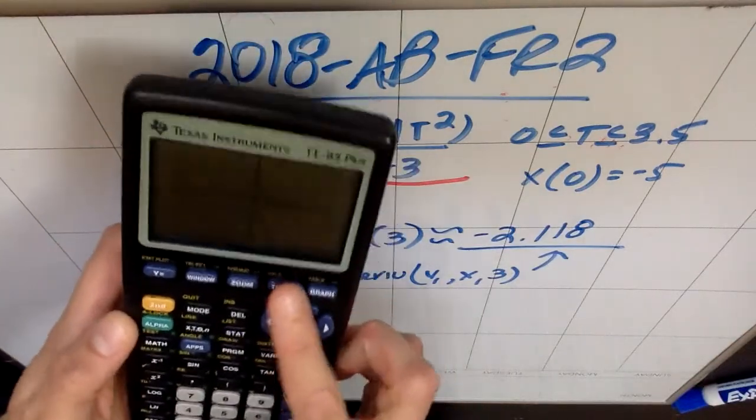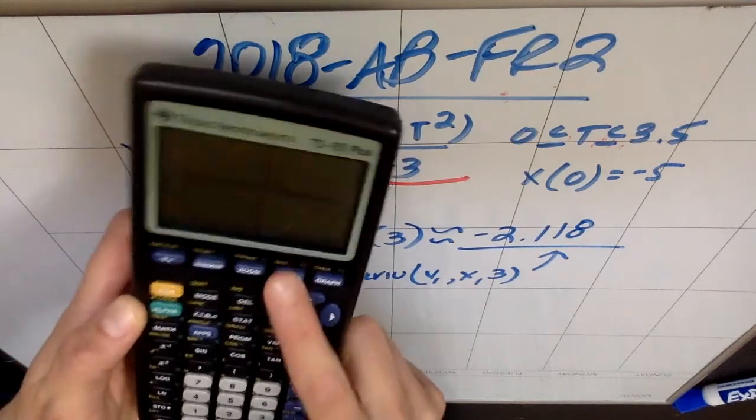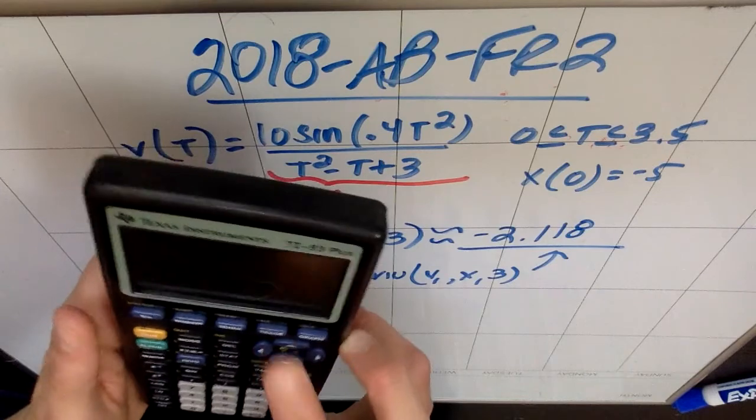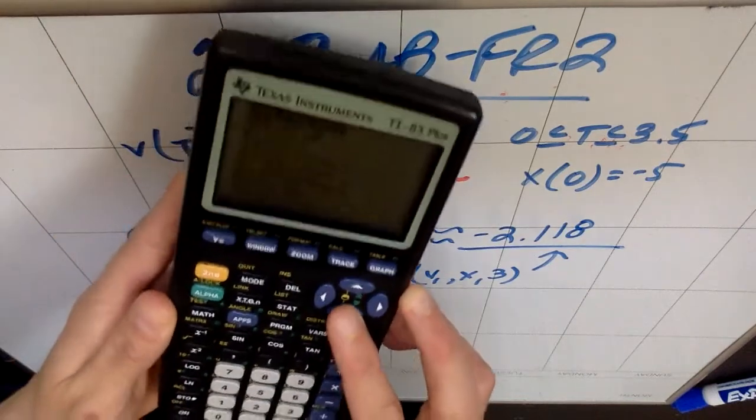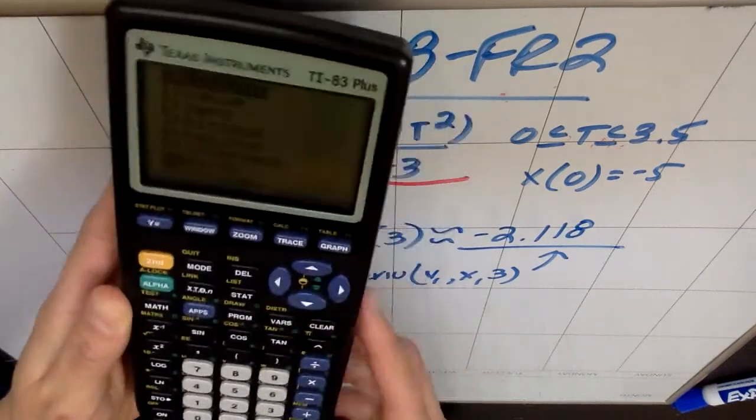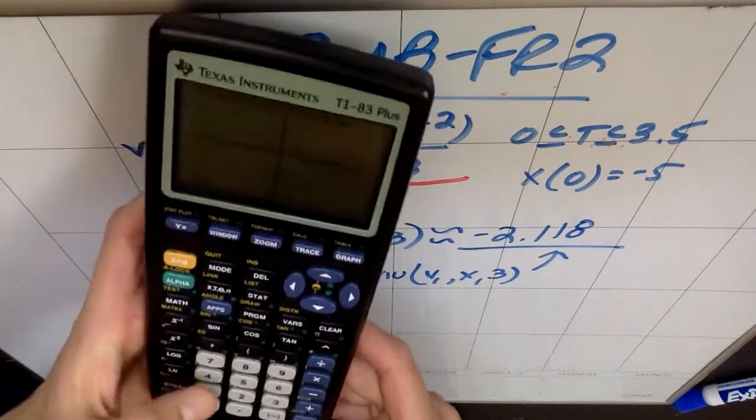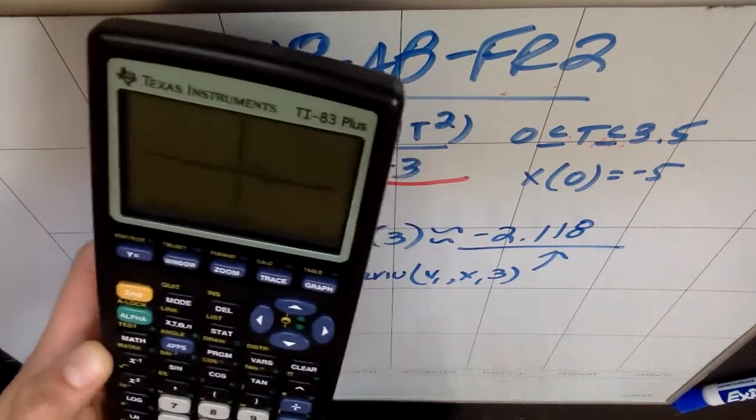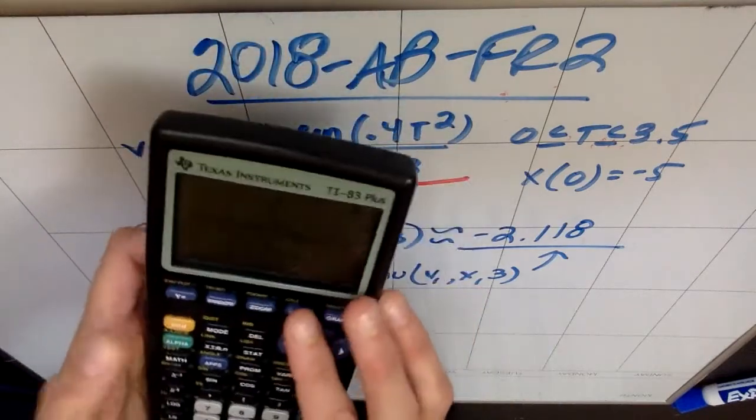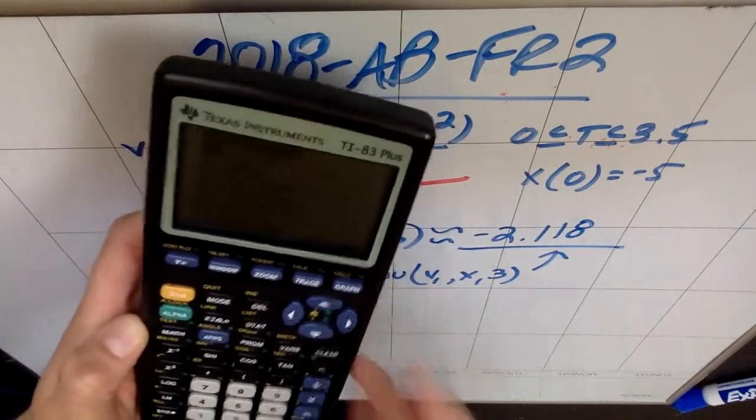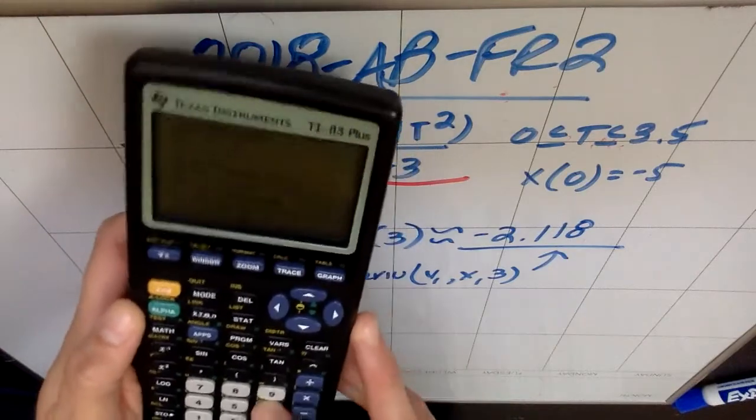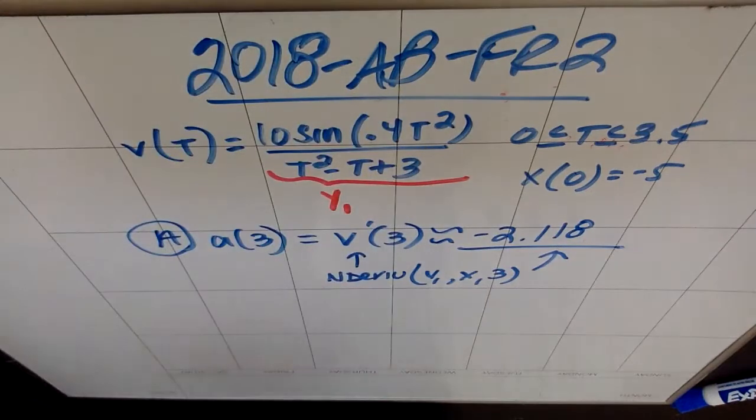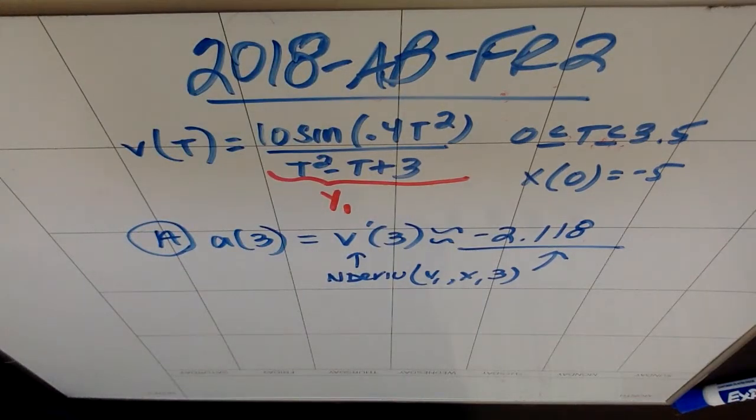It's negative 2.118, and they didn't give me units, so I don't need units. And again, you should know that the way to do this is by going to n-derive, which is math 8, y1 with respect to x at 3, and that's how you get that. But there's another interesting way to do it. I'm going to zoom 6 for a sec. It doesn't matter that my window is kind of terrible because I just needed to make sure that 3 was in the window. A cool thing you can do is if you hit second calc, it'll give you the option to calculate dy dx.